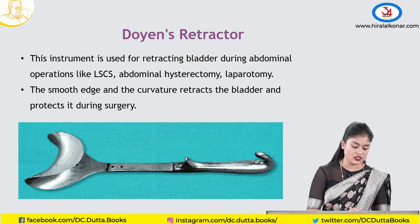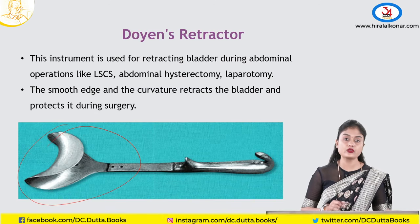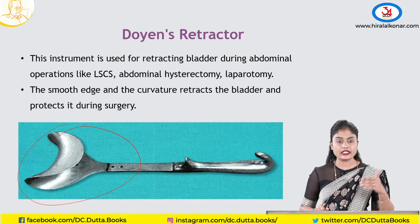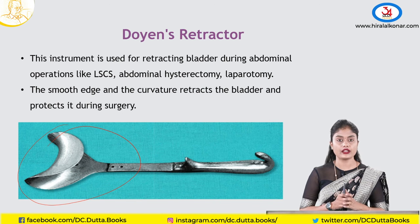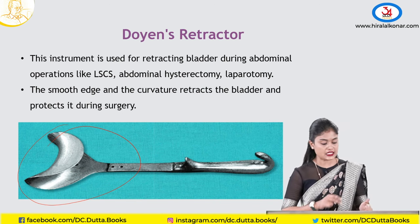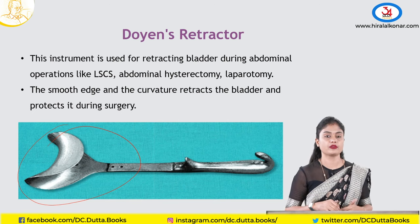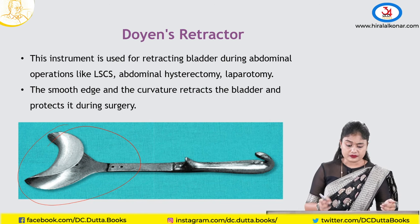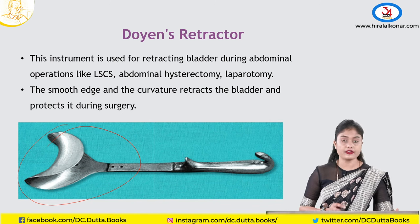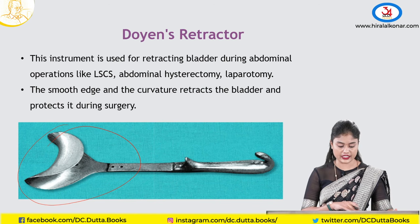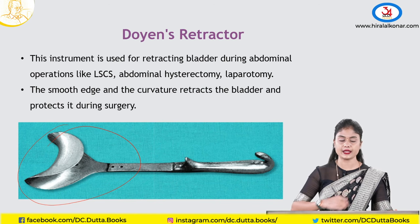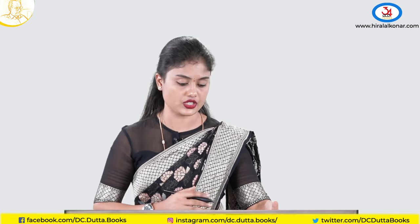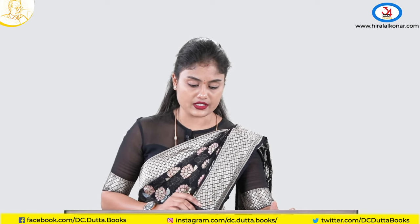Coming to Doyne's retractor. This instrument is used to retract tissue in caesarean sections or hysterectomies. Doyne's or Deaver's retractor is preferred in hysterectomies as it holds the bladder away from the uterine tissue at the incision site, preventing injury to the bladder or adjacent structures. All retractors help push tissue away from the surgical site.